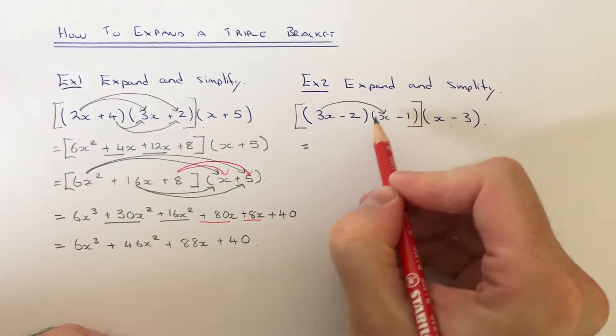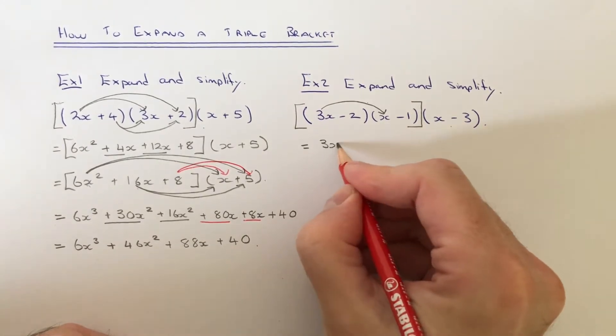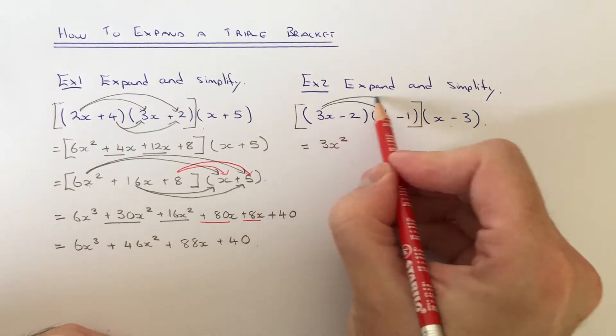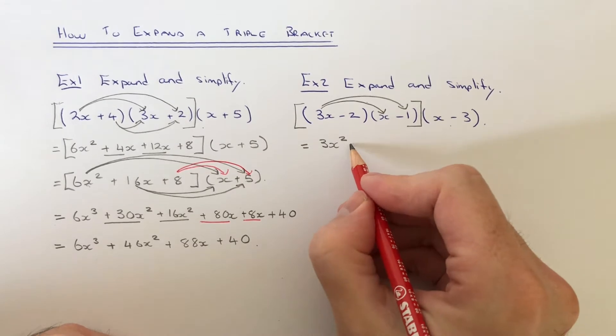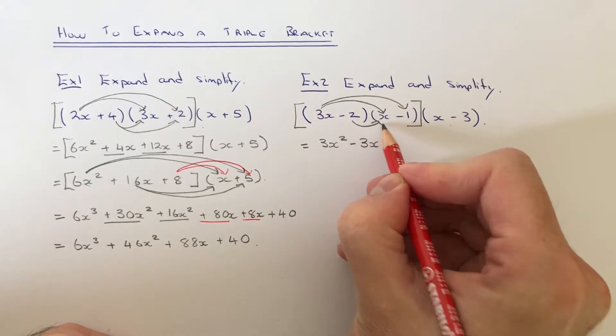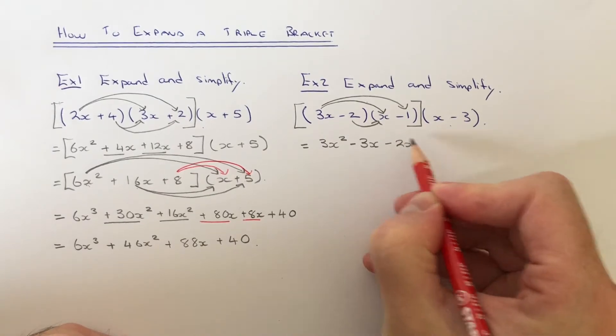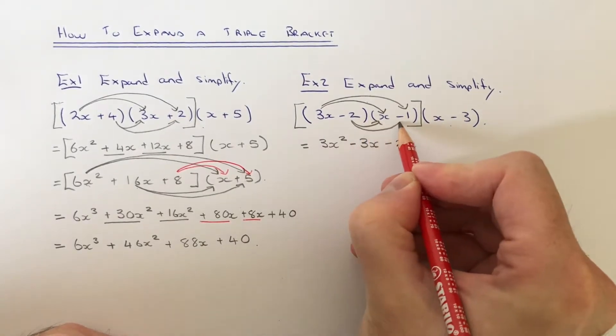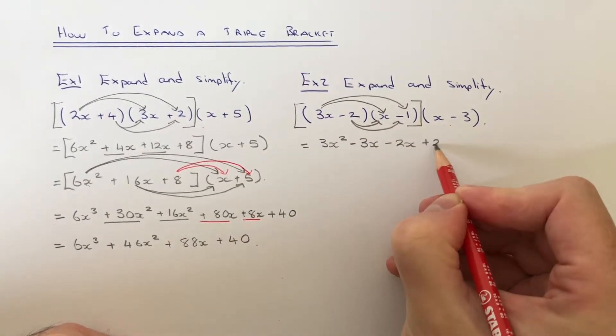If we do 3x times the x, that's 3x squared. 3x times minus 1 is minus 3x. Minus 2 times x is minus 2x. And minus 2 times minus 1 is plus 2.